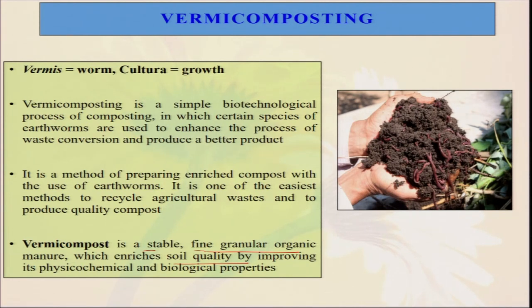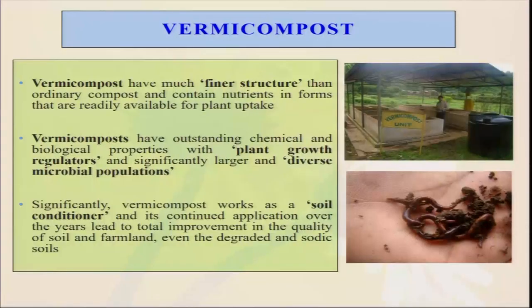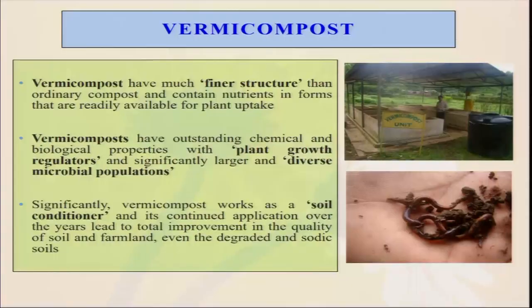Earthworms burrow within the field, and after burrowing, water and air entry is enhanced, bulk density decreases, and porosity increases — so plant growth is better. Vermicompost has a very fine structure — any good quality vermicompost is easily identifiable as black to brown in color, just like tea leaves, with no odor. It has very high market demand in cities for roof gardens, ornamental plants, indoor plants, and balcony gardens — selling for more than 25 to 40 rupees per kilogram. Vermicompost has outstanding chemical and biological properties with plant growth regulators — when material passes through the earthworm body, they release plant growth hormones like auxins, gibberellins, and other things, which also help promote plant growth.